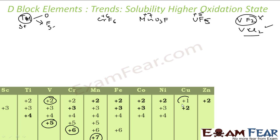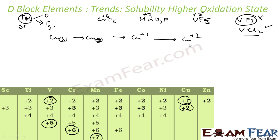Looking at the copper example, Cu2+ is more stable. To go from copper solid to copper gas requires atomization energy, then ionization energy to become Cu+ and further ionization energy to become Cu2+. But Cu2+ is still more stable than Cu+. Why? Because the hydration energy of Cu2+ is much greater than the hydration energy of Cu+, compensating for all the energy required.